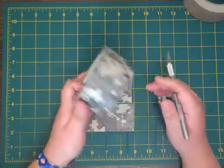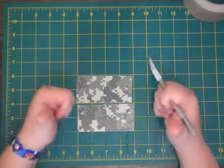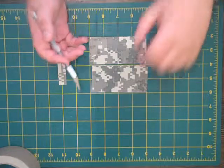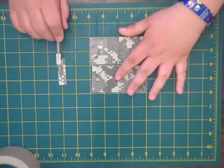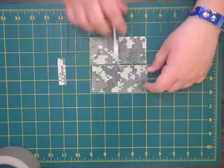So without any further ado, let's get started. First off, you're going to need to cut out three separate strips, one that's a half an inch, and then two that are four inches long.